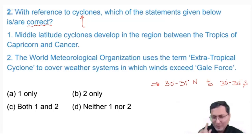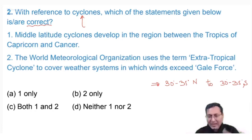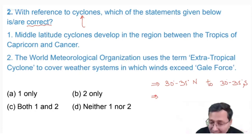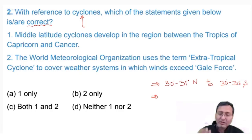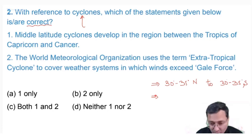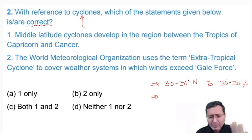The other cyclone is the temperate cyclone. Temperate cyclones are formed beyond 30 to 35 degrees north and 30 to 35 degrees south — from 30-35°N to 90°N, and from 30-35°S to 90°S. From 30-35 degrees to the poles, you will find primarily temperate cyclones.